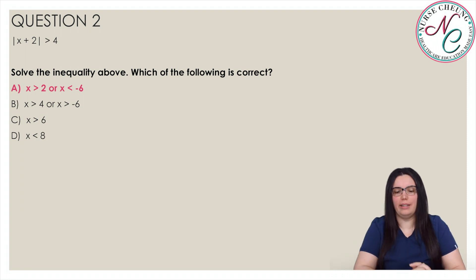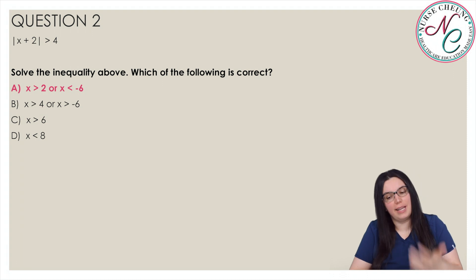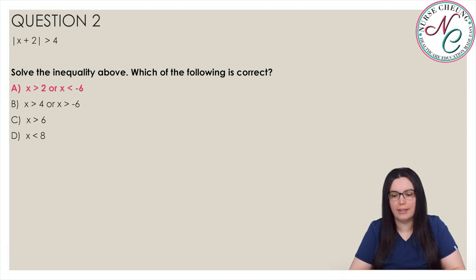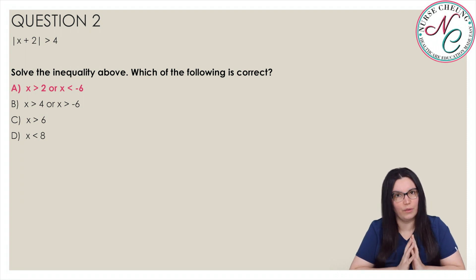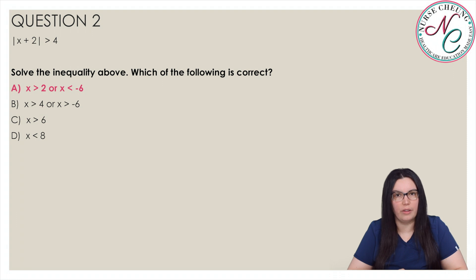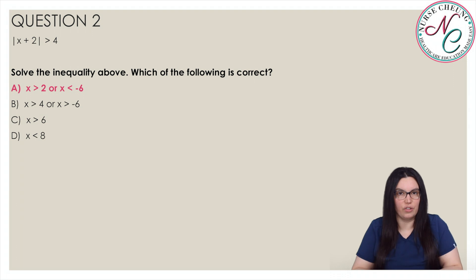The absolute value of x plus 2 is greater than 4 tells us that the quantity x plus 2 lies more than 4 units away from 0 on the number line. So x plus 2 could be greater than 4 or less than negative 4. We set up two inequalities: x plus 2 is greater than 4 gives us x is greater than 2, and x plus 2 is less than negative 4 gives us x is less than negative 6.